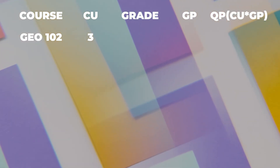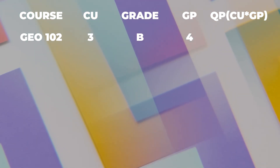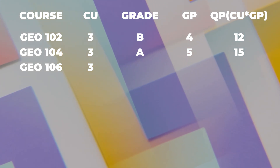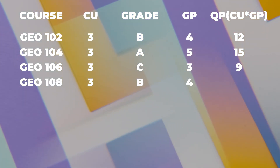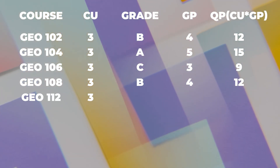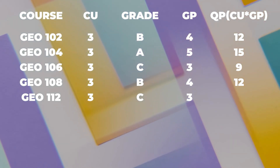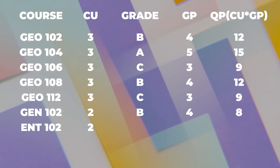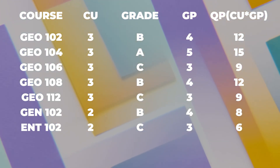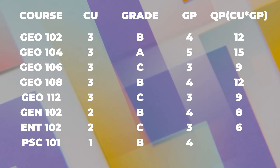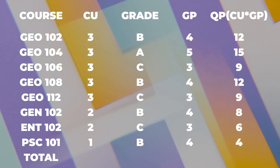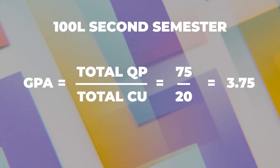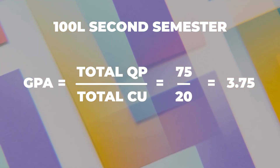In second semester: GEO 101, a 3 credit unit course, scored B, giving a quality point of 12. GEO 104 scored A, giving a quality point of 15. GEO 106 scored C, giving a quality point of 9. GEO 108 scored B, giving a quality point of 12. GEO 112 scored C, giving a quality point of 9. GEO 102, a 2 credit unit course, scored B, giving a quality point of 8. E&T 102 scored C, giving a quality point of 6. PSE 101, a 1 credit unit course, scored B, giving a quality point of 4. Total credit unit is 20, total quality point is 75. So 75 over 20 gives 3.75 — his GPA for second semester is 3.75.